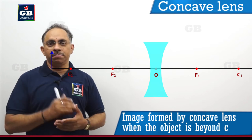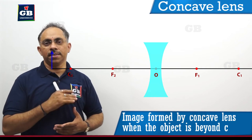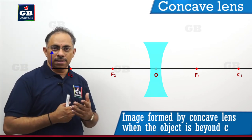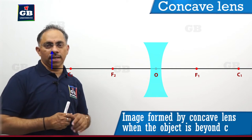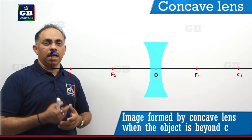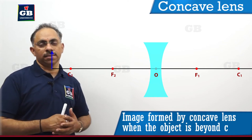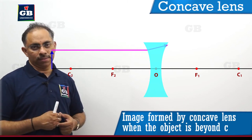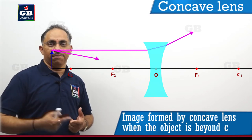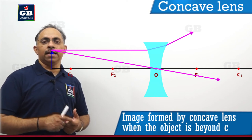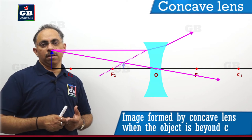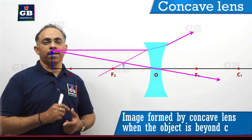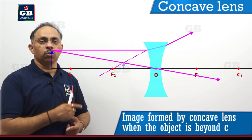Now we bring the object from infinite distance closer to the lens. Here, OJ is the object, where point O rests on the principal axis and J is at the other end. To find the image position, I take a light ray from point J parallel to the principal axis. I also take a second light ray from the same point J passing through the optic center. Whenever a light ray passes through the optic center, it has no deviation and goes straight through.